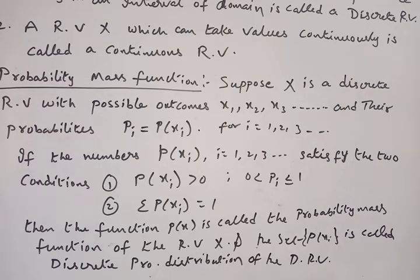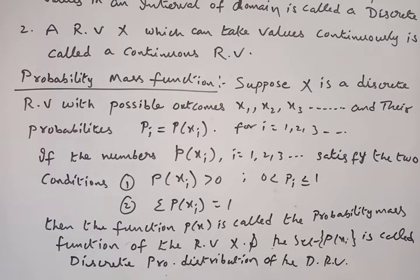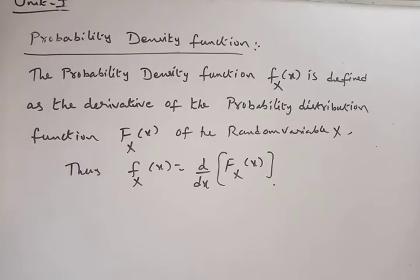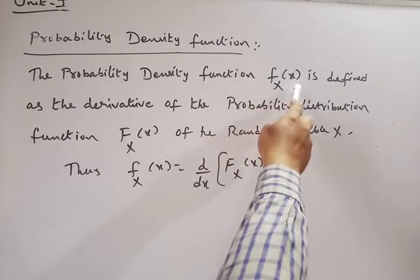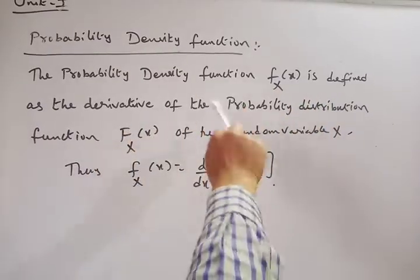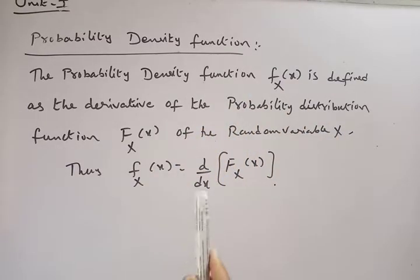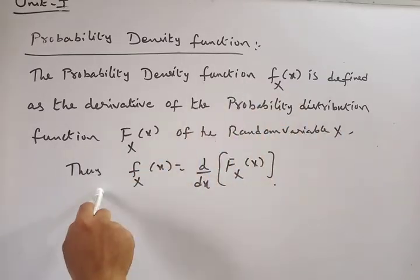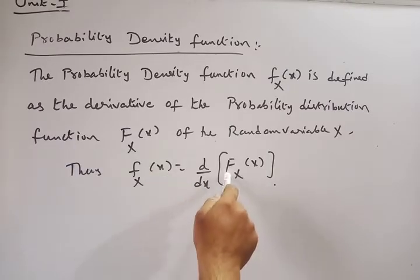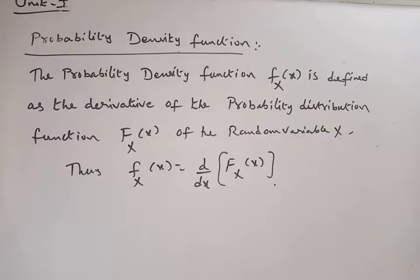Next, we have the probability density function. The probability density function, lowercase f of X, is defined as the derivative of the probability distribution function capital F of capital X of the random variable capital X. That means f(X) = d/dX of F(X). You need to differentiate the random variable's probability distribution function once.